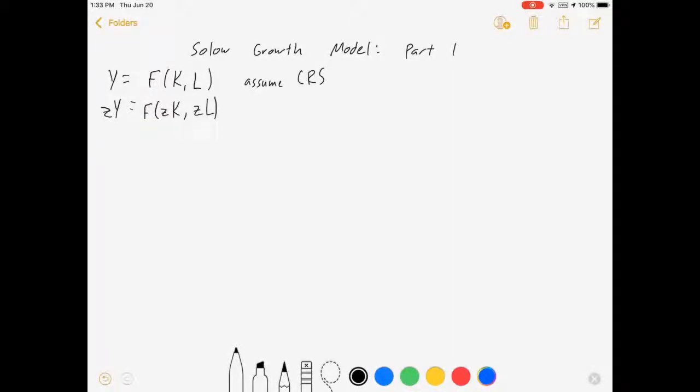So what if I set Z equal to 1 over L? Well then, Y over L would be equal to F of K over L comma 1. Which, this is output per worker. I'm going to denote that as little y, lowercase y is output per worker, is equal to some function of little k, which is capital per worker, and then L is constant. So it's really just a function of k now. Now this production function is what we're going to be dealing with most, and plug in a level of capital per worker and you get output per worker.